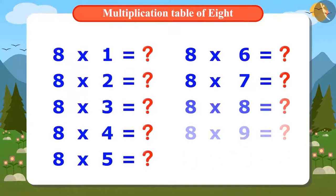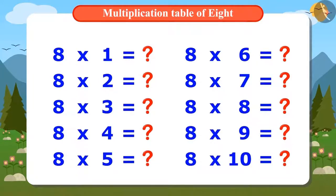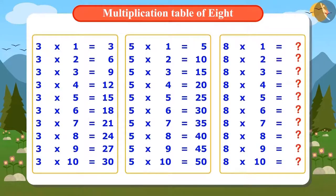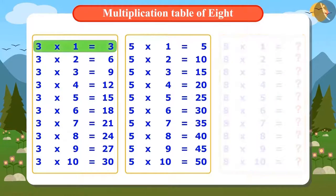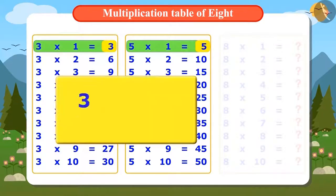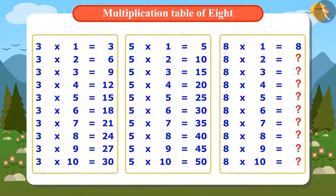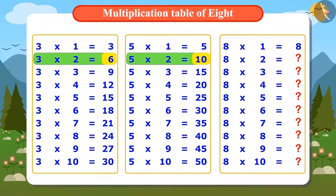Vandana doesn't know the multiplication table of 8, but she knows an easy trick through which we can find it. Can you tell us an easy way to find the multiplication table of 8? Vandana says she can find the table of 8 with the help of multiplication tables of 3 and 5. When we add the first number of the multiplication tables of 3 and 5, we get 8, which is the first number of the multiplication table of 8. Similarly, we can find the second number of the multiplication table of 8 by adding the second number of the multiplication table of 3.